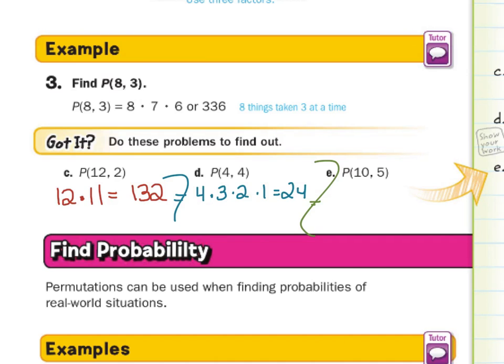Then in E, we're starting with 10 and going out five times. So 10, nine, eight, seven, and six. That's one, two, three, four, five numbers. And 10 times nine times eight times seven times six is 30,240.